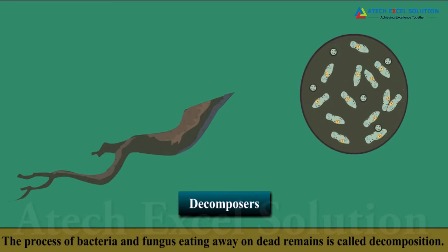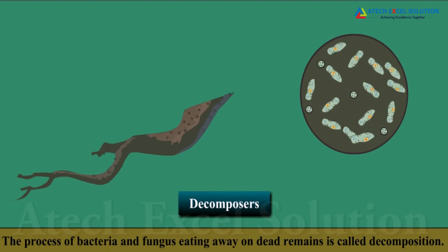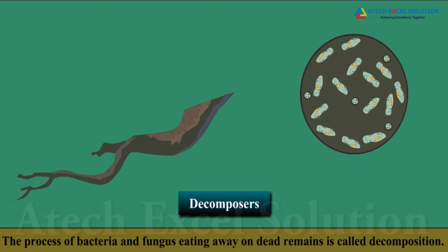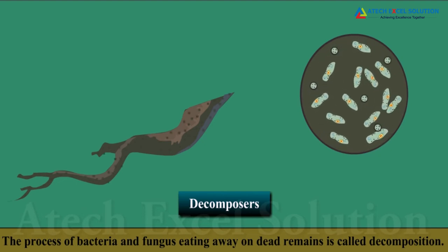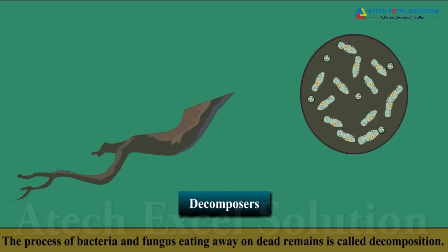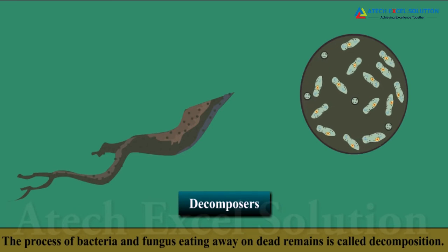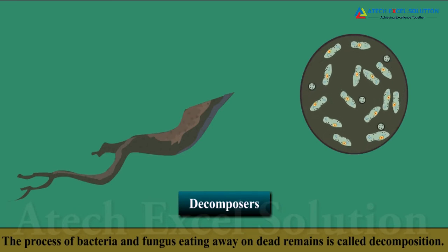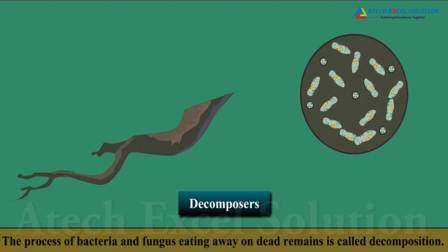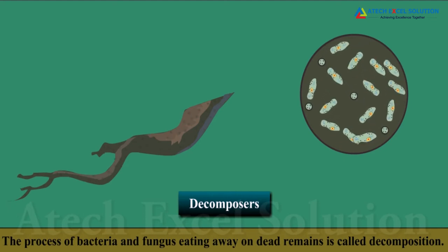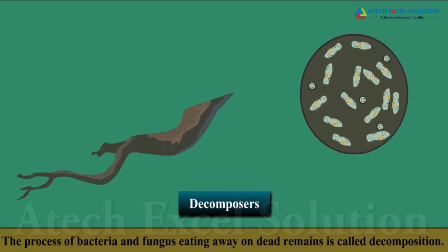Finally, we have the decomposers like bacteria and fungus. Look at that branch that has fallen off. Do you think it will remain like this if the gardener does not take it away? No. Fungus, mushroom and bacteria will eat away the branch. This process of bacteria and fungus eating away is called decomposition. They are therefore called decomposers. Bacteria and fungus play an important role of disposing garbage.